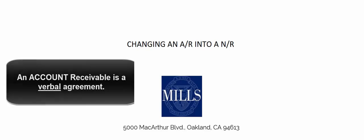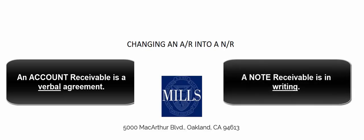An account receivable is a verbal agreement between us and our customer. We send them an invoice and they're going to pay us in 30, 60, or maybe 90 days. But sometimes customers run a little short on cash and they approach us about getting an extension, and we might agree to change their account receivable into a note receivable.